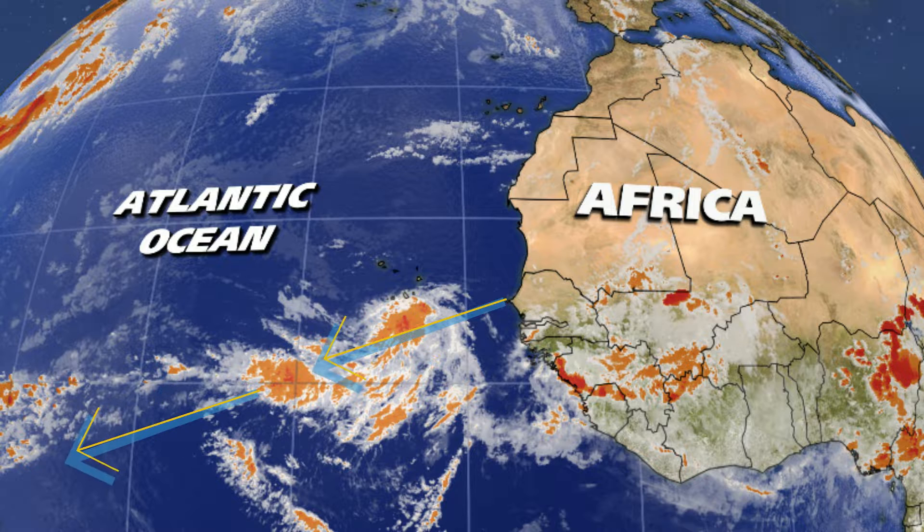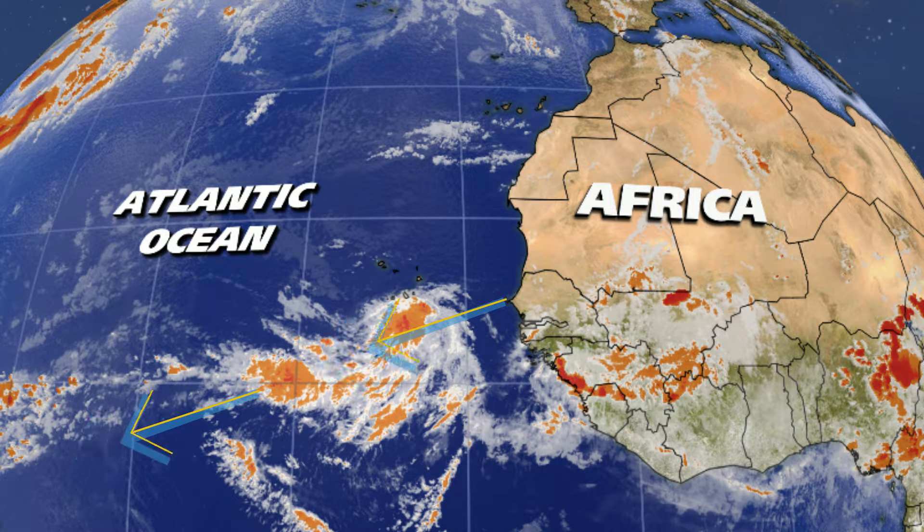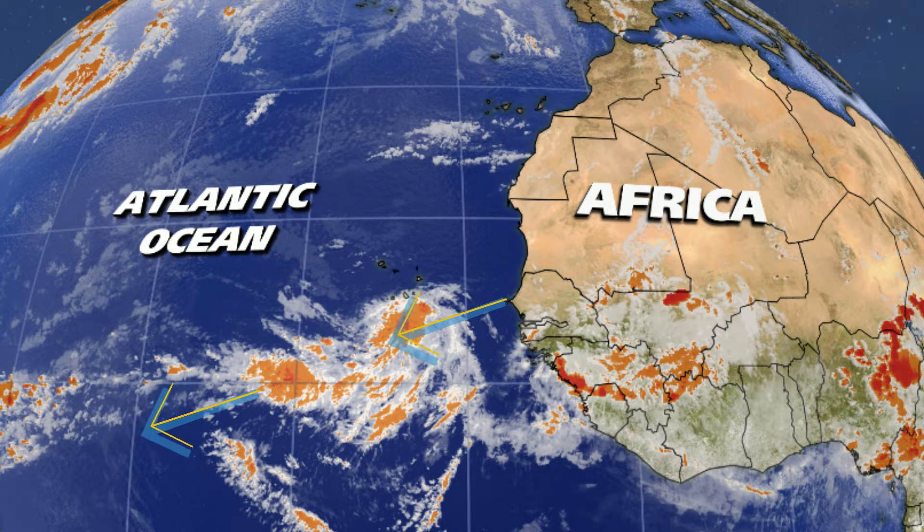They often form off the coast of West Africa, then travel across the Atlantic Ocean along the edge of the ITCZ.